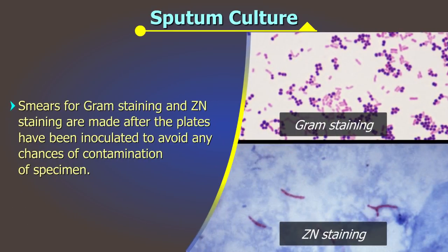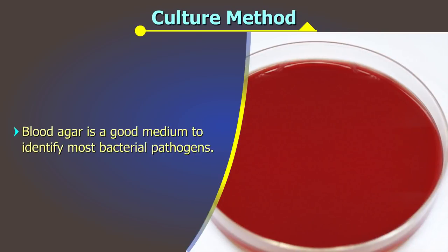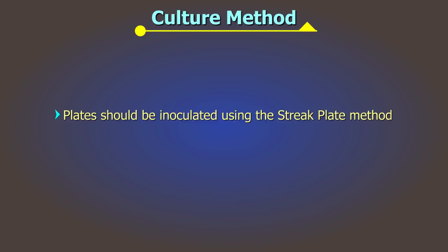Smears for Gram staining and Ziehl-Neelsen staining, when required, should be made after the plates have been inoculated to avoid any chances of contamination. Culture method: material for smear preparation for staining and culture should be taken from the most purulent portion of the sputum. Blood agar is a good medium to identify most bacterial pathogens; sometimes chocolate agar can also be inoculated as it enhances the growth of pneumococcus and Haemophilus. The plates should be inoculated using the streak plate method and incubated for 24 to 48 hours at 35 to 37 degrees centigrade.